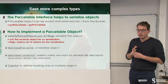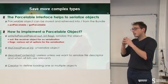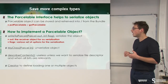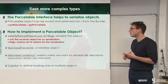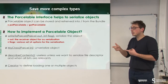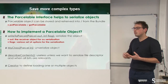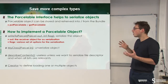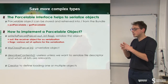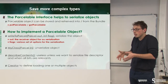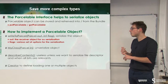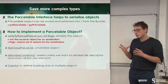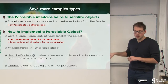Parcelable objects require implementing a few methods. The first one is writeToParcel, which serializes the object. It takes two parameters: Out, which is the parcel to fill, and a flag, which is a set of values for serialization options. The second one is a constructor which takes a parcel and is able to deserialize the object from it. The third method is describeContents, which is useless unless you want to serialize file descriptors. Finally, you have to define the creator.